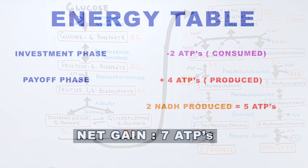Looking at the energy table we see two ATPs are consumed in the investment phase and four ATPs are formed in the payoff phase. And also two NADH molecules are formed in payoff phase which equals five ATPs. That gives us a total net energy of seven ATPs from glycolysis.